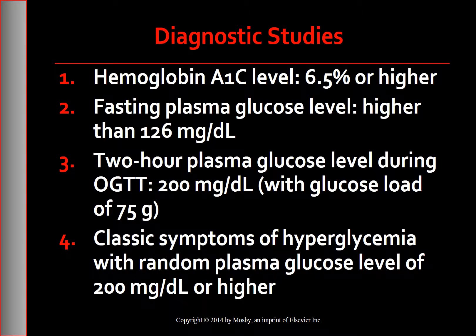It is preferable for the repeat test to be the same test used initially. For example, if a random blood glucose test showed elevated blood glucose levels, the same test should be used again when the person is retested. The accuracy of test results depends on adequate patient preparation and attention to the many factors that may influence test results.